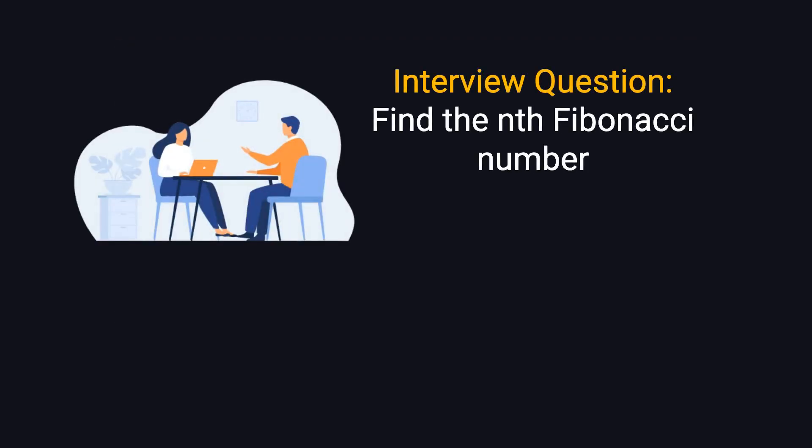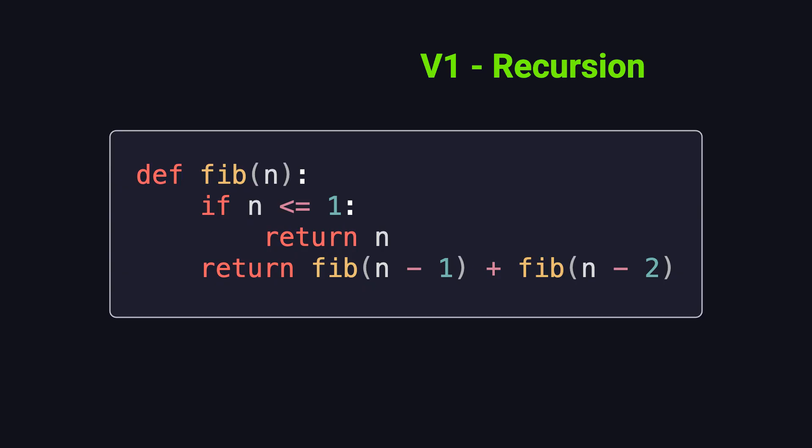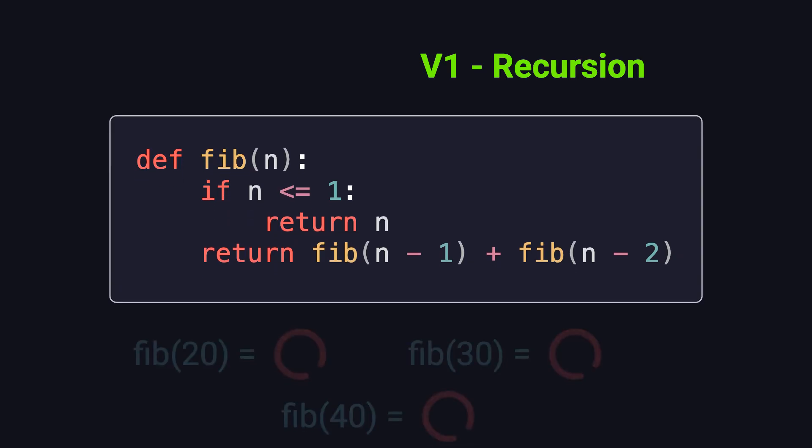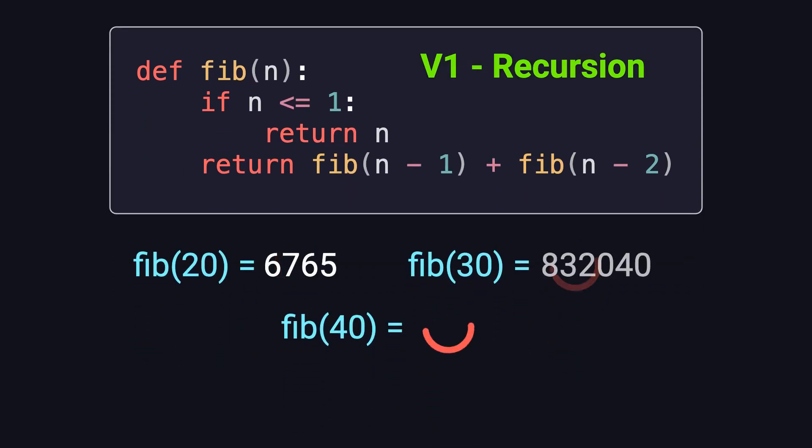Now let's imagine you're in a job interview. The interviewer asks you to write a function that returns the nth Fibonacci number. Your first instinct might be to use recursion, right? Let's try the most straightforward recursive approach. The code looks clean, and it's functionally correct. So what's the issue? Well, if n is small, say 20 or 30, it runs pretty quickly. But once you try to compute Fib of 40, you'll notice it takes over 10 seconds to finish. And if you go up to Fib of 45 or 50, the delay becomes painfully long.